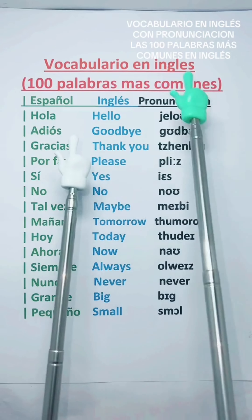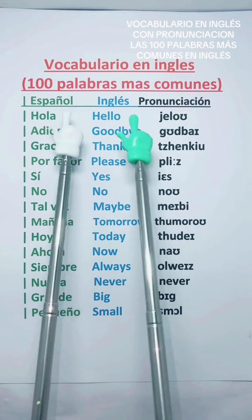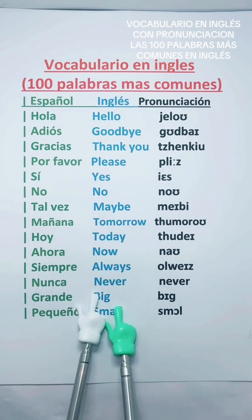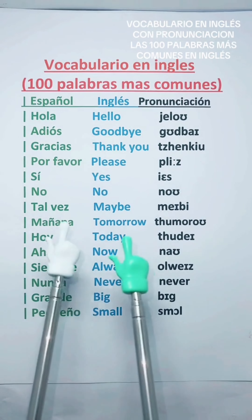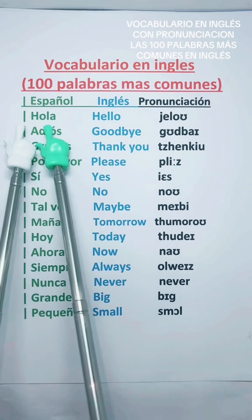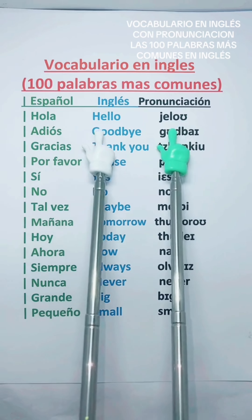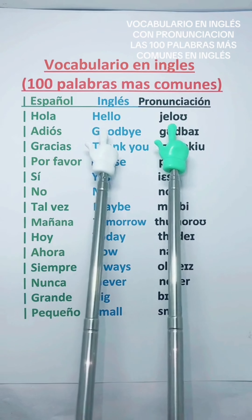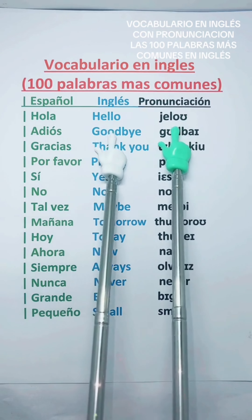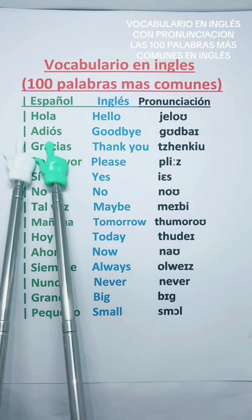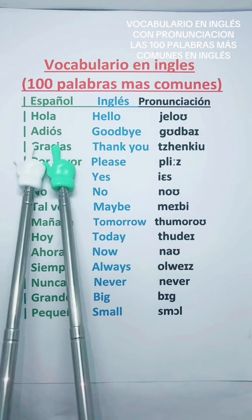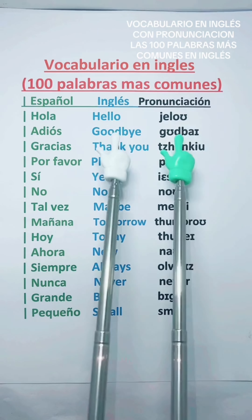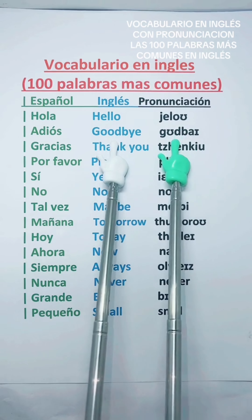Aprende a pronunciar las 100 palabras más comunes en inglés. Comencemos. Hola — Hello. Repite conmigo. Hello. Adiós — Goodbye.